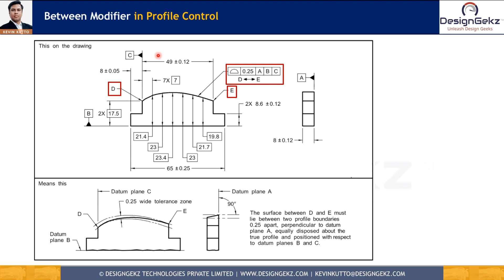The fourth modifying symbol is the between symbol, used to define profile control between defined points. In this example, a profile of a surface of 0.25 with respect to datum A as primary, datum B as secondary, and datum C as tertiary is applied between points D and E. The between symbol has two-sided arrows, and as shown here, all surfaces can vary within the tolerance zone between point D and E.